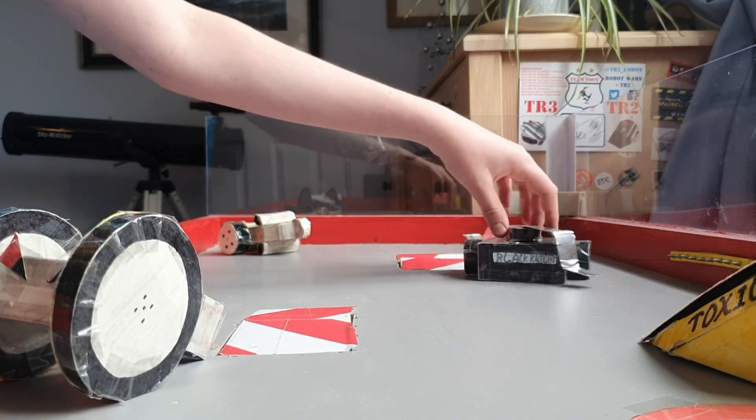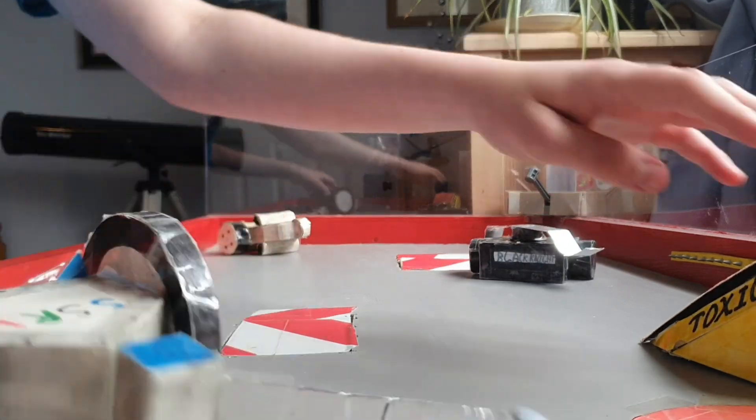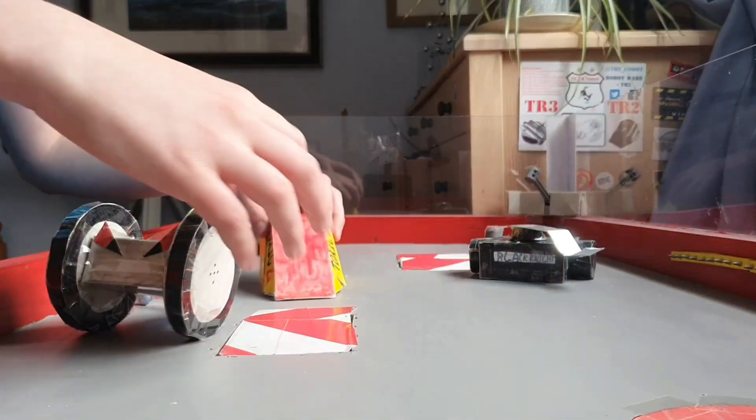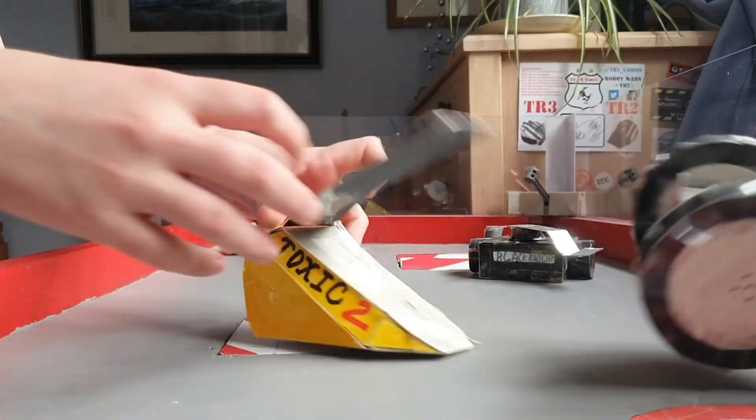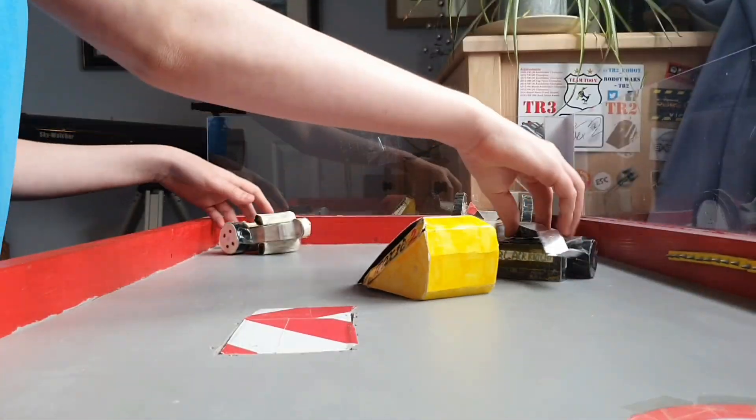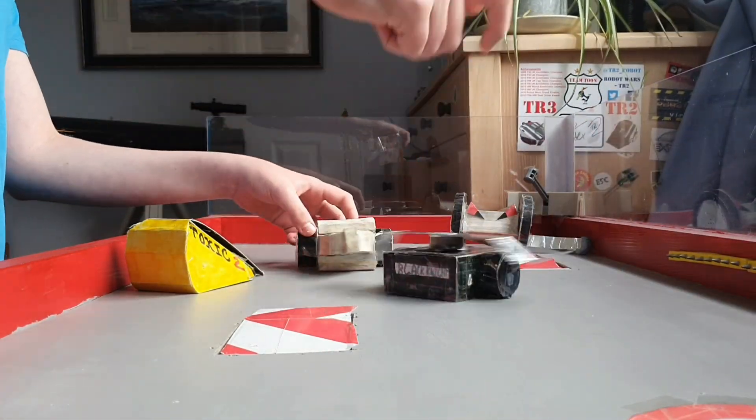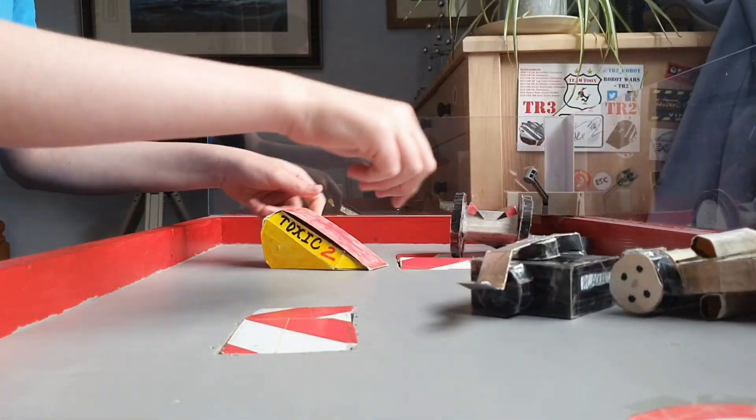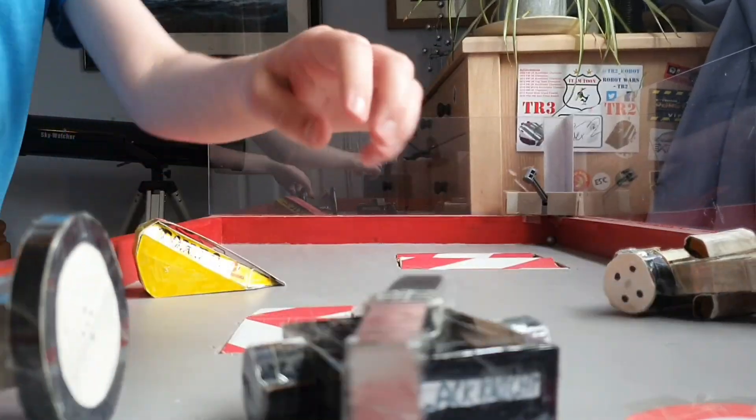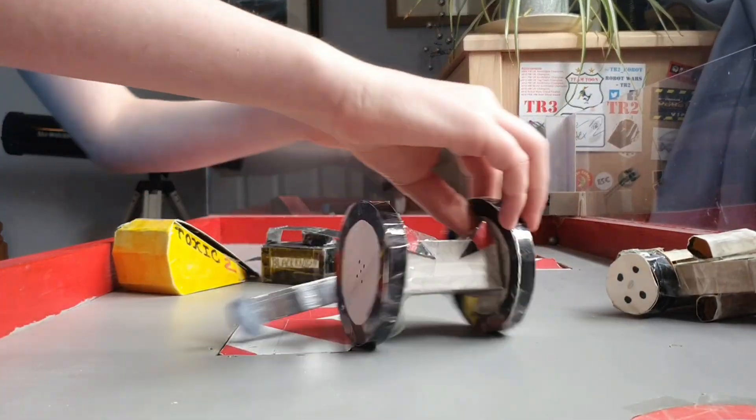Three, two, one, activate. Here we go, Toxic 2 initially getting out of there. There's Tailwhip with the thwacking tail, very strange machine. Black Knight with that overhead spinner, you can see it spinning up. Gaston trying to come under the attack there. The wheel's ripped off by X-303 in Model Wars Series 1.